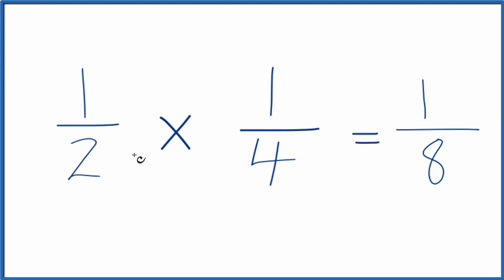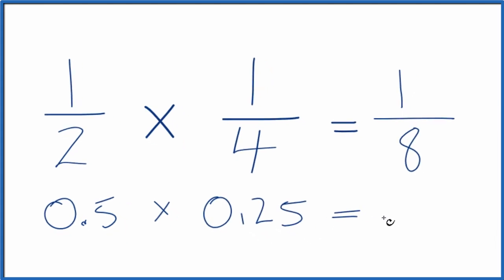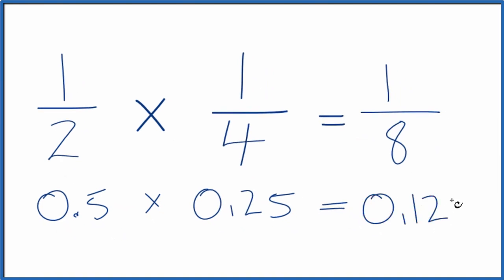You could also do this with decimals. One half, that's the same as 0.5. We multiply that by one fourth, which is 0.25. We'd end up with 0.125. If you divide one by eight, you would get 0.125. These are equivalent.